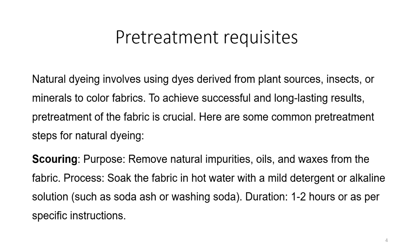Natural dyeing involves using dyes derived from plant sources, insects, or minerals to color the fabric. To achieve successful and long-lasting results, pre-treatment of the fabric is crucial. One common pre-treatment step is scouring, whose purpose is to remove natural impurities, oils, and waxes from the fabric. The process involves soaking the fabric in hot water with a mild detergent or alkaline solution — perhaps just soda ash or washing soda — for a duration of one to two hours or as per specific instructions.